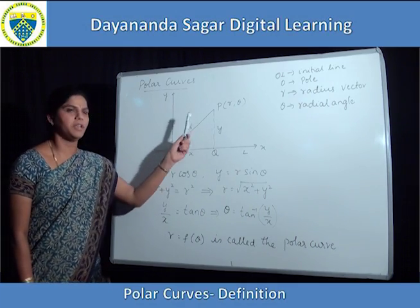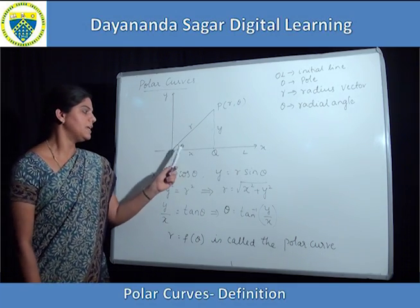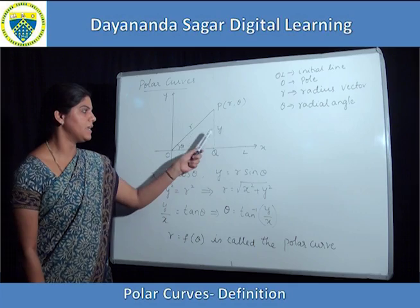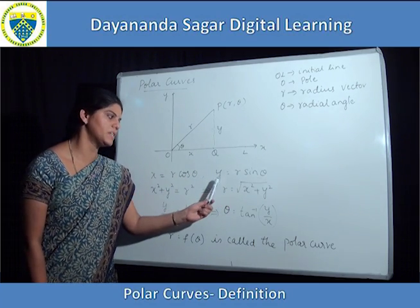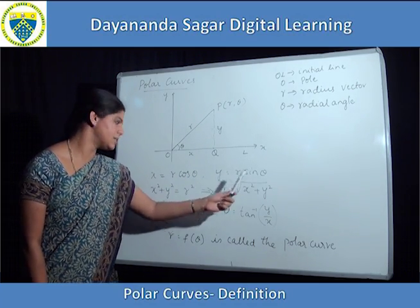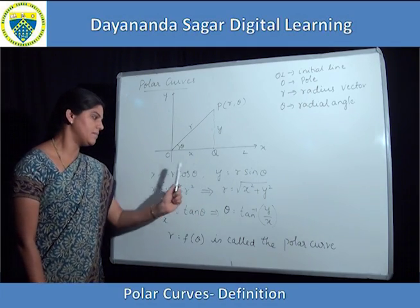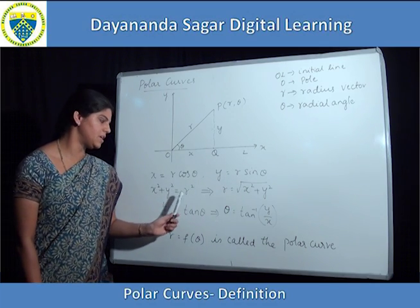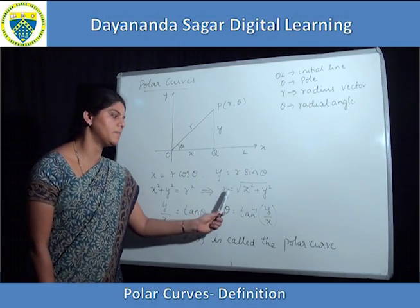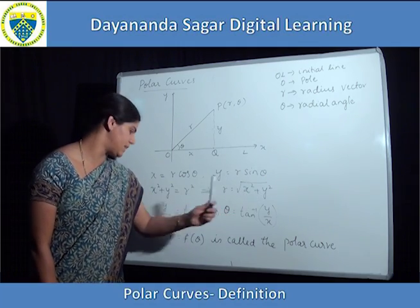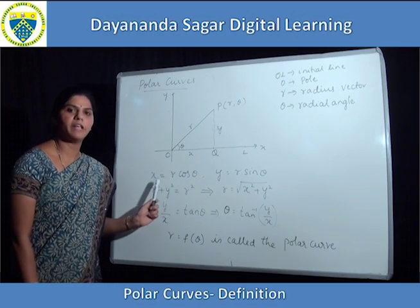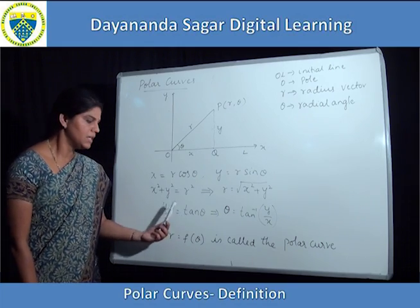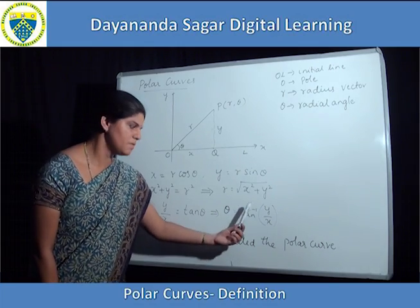From the right angle triangle OPQ, cos theta is equal to x by R, so from that we get x is equal to R cos theta. Sin theta is equal to y by R, so this implies that y is equal to R sin theta. Squaring and adding x and y, we get x squared plus y squared equal to R squared cos squared theta plus R squared sin squared theta, which is equal to R squared. From this we get R is equal to root of x squared plus y squared. Then y by x gives R sin theta by R cos theta, which is equal to tan theta, so theta is equal to tan inverse of y by x.